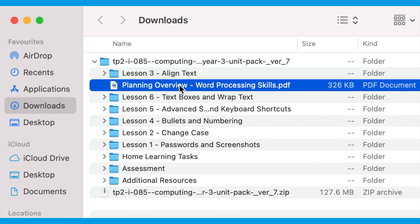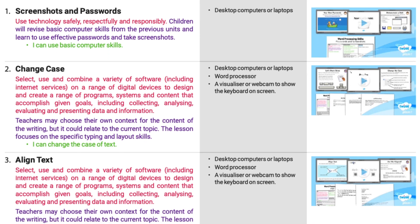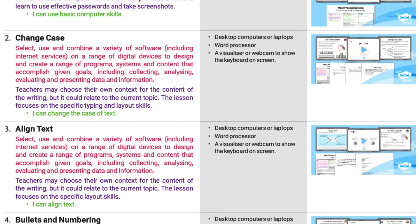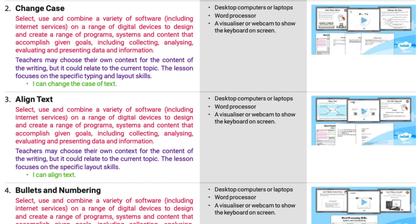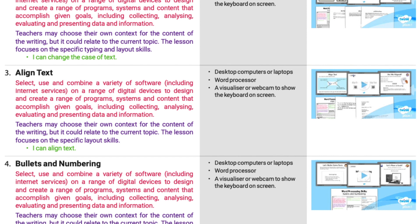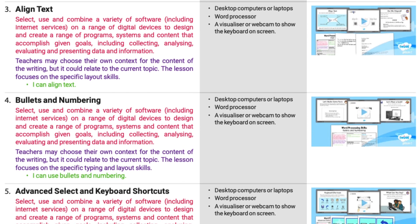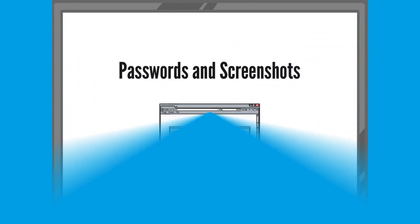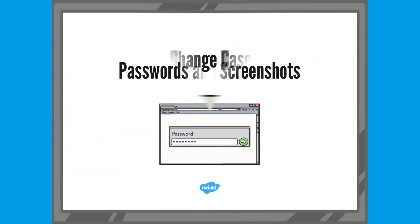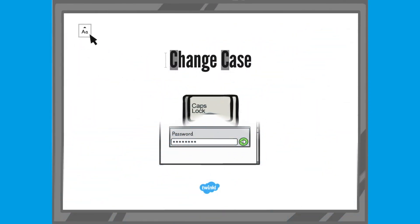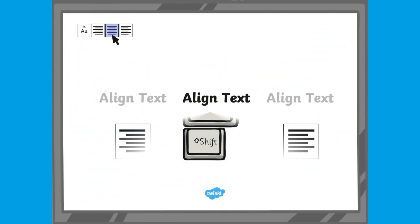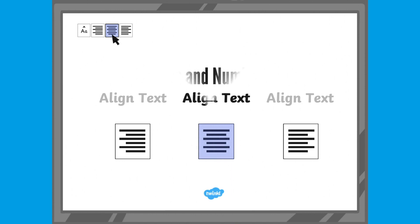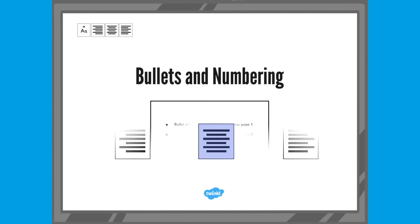To see this at a glance, open up the planning overview where you will find a breakdown of lessons, resources, and learning intentions. The succession of lessons perfectly helps your child develop their word processing skills, building on their knowledge from one lesson to the next.